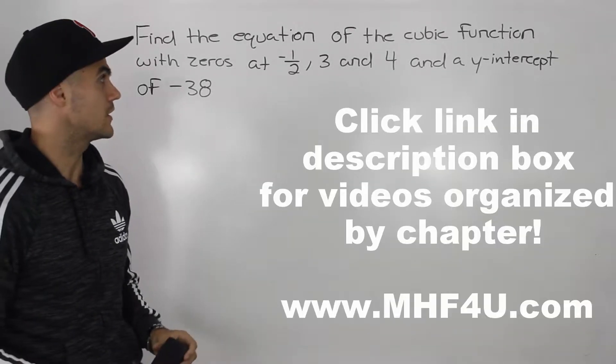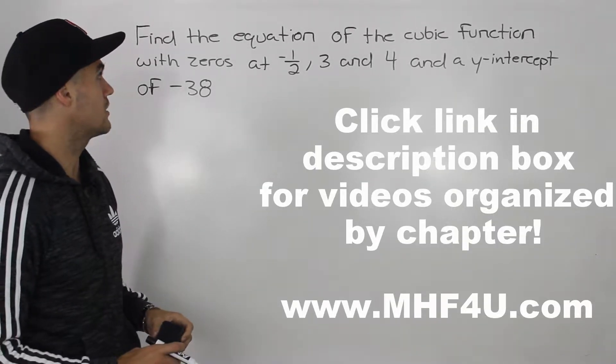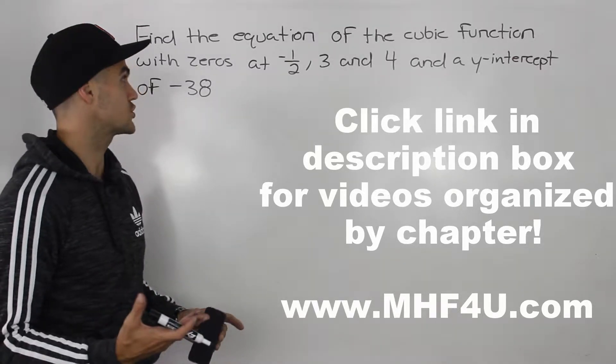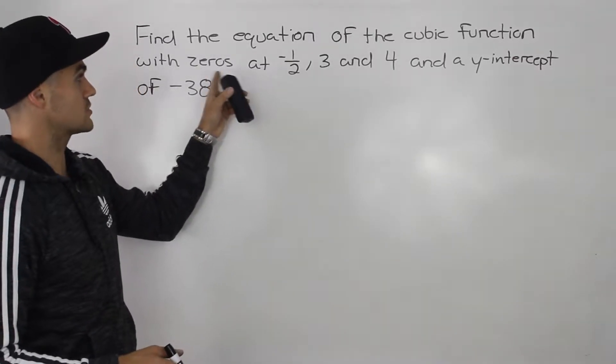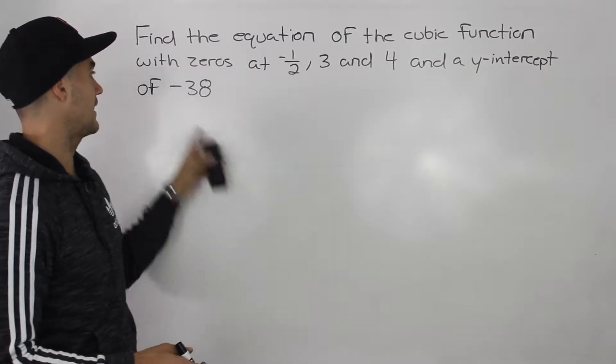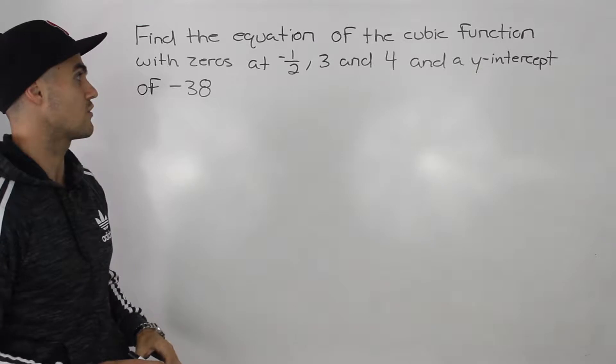What's up everybody? Moving on to another question. We're dealing with polynomial functions and we have to find the equation of a cubic function that has zeros or x-intercepts at negative one-half, three and four, and it has a y-intercept at negative 38.